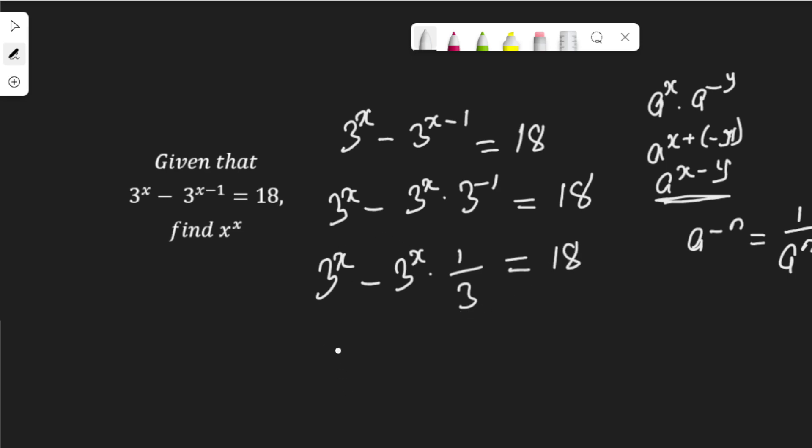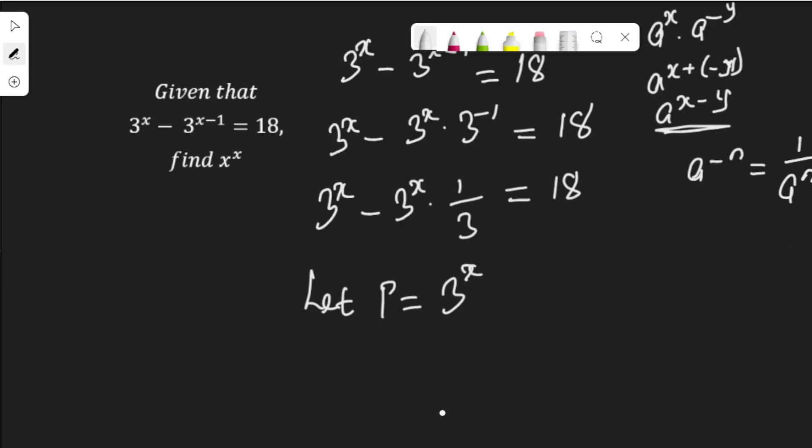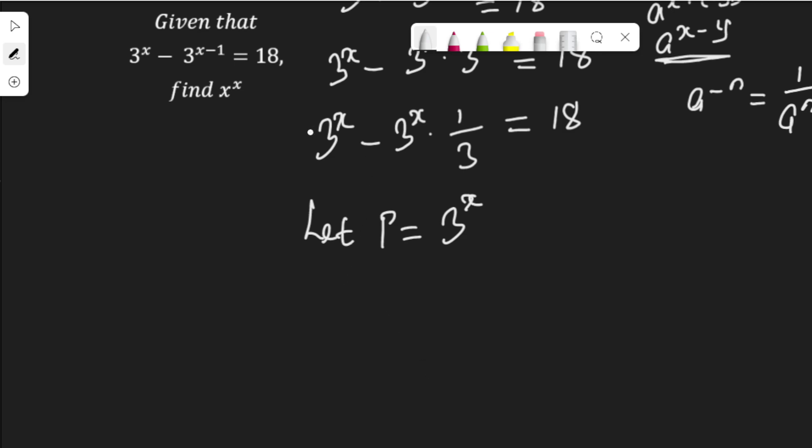Let's replace this 3 to the power of x with something. Let me use letter p. Let p be 3 to the power of x. In other words, anywhere I say 3 to the power of x, I'm going to replace it with p. So this equation now becomes p minus p times 1 over 3 equal to 18.